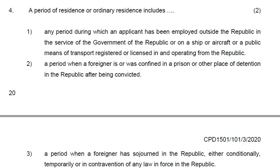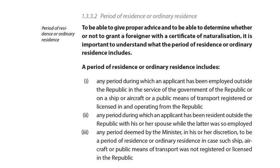The fourth question: 'A period of residence or ordinary residence includes...' — the answer is one: any period during which an applicant has been employed outside the Republic in the service of the government of the Republic, or on a ship or aircraft or a public means of transport registered or licensed in and operating from the Republic. This is found on page 12 of our study guide.